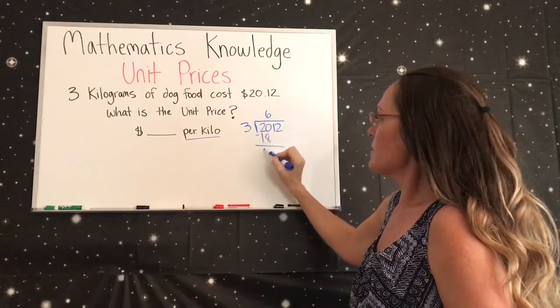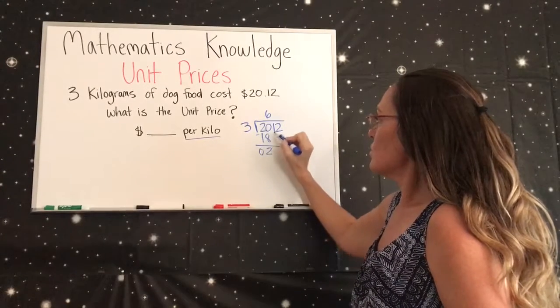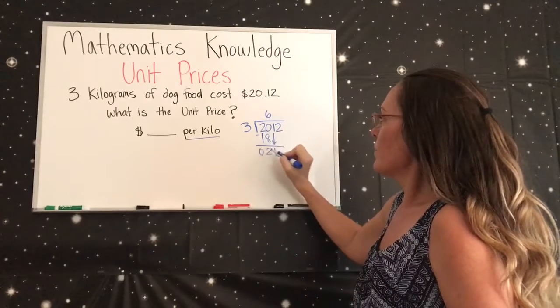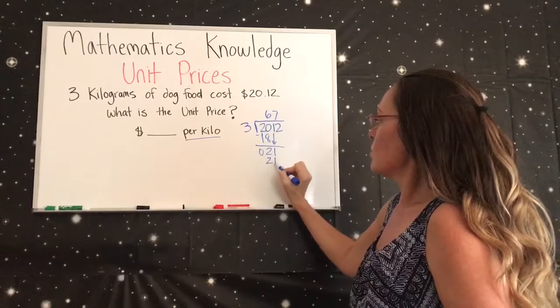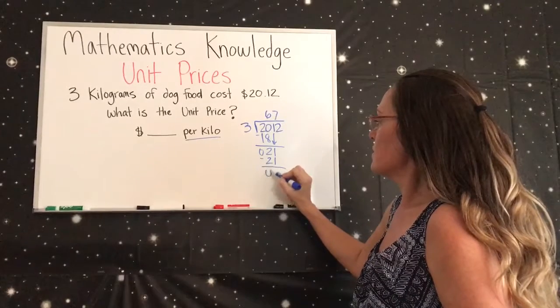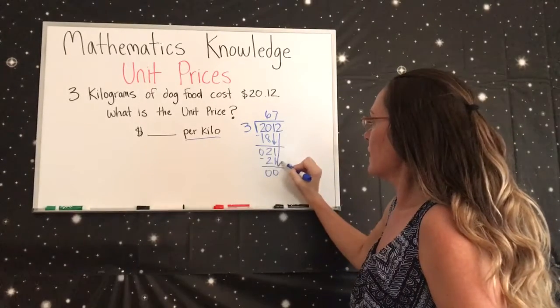You always bring down the next number, which is 1. 3 goes into 21 seven times. 7 times 3 is 21, then you subtract to get 0. Then you bring down the last number, which is 2.